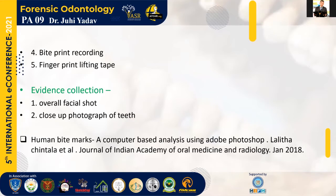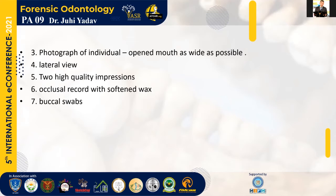Evidence collection from the criminal or suspect involves taking an overall facial shot — recording each and everything related to facial features — as well as close photographs of the teeth and dentition of the accused. We photograph the individual with open mouth and collect views of the deepest point in the oral cavity, along with lateral views. High-quality impressions should be recorded for later use. Occlusion should be recorded using softened wax in both centric occlusion and centric relation. Buccal swabs should be collected so we can match the saliva from the criminal with that collected from the victim to reach a conclusion.